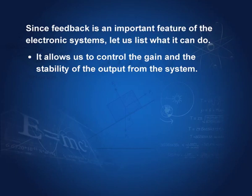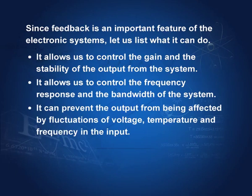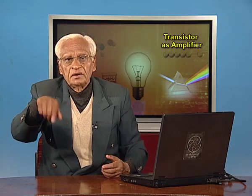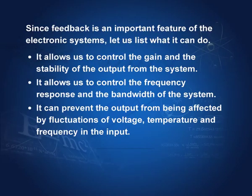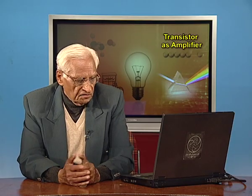Since feedback is an important feature of electronic systems, let us list what it can do. It allows us to control the gain and the stability of the output. It allows us to control the frequency response and the bandwidth of the system. It can prevent the output from being affected by fluctuations of voltage, temperature and frequency in the input — because the closed loop gain is just 1 by B. It can insulate the output from distortions due to the non-linear nature of the electronic devices.